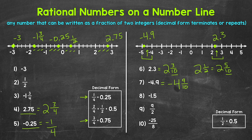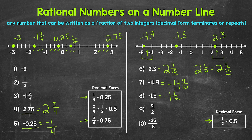Next, let's move on to number eight. We have negative one and five tenths, which is negative one and a half — five tenths equals a half. We can write this in fractional form as well. Negative one and a half will be to the left of zero, in between negative one and negative two, and it does land exactly on the half. So this is negative one and a half, or negative one and five tenths in decimal form.